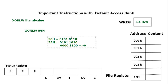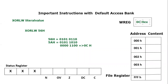Converting to hexadecimal: the lower nibble 1100 equals 12, which is 0xC, and the upper nibble 0000 is 0. So the result is 0x0C, and it will be updated in the working register. The new content of the working register will be 0x0C.